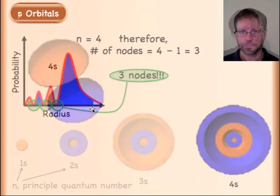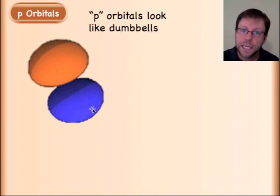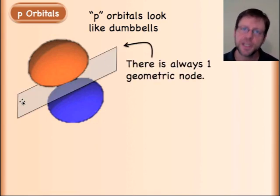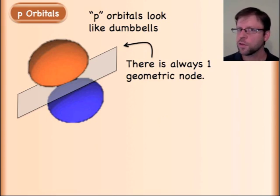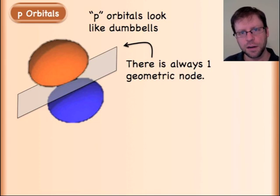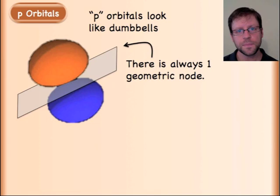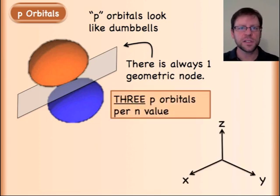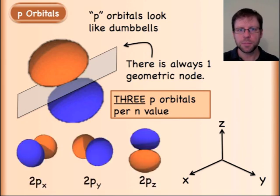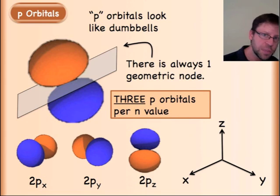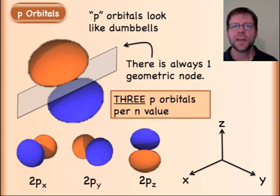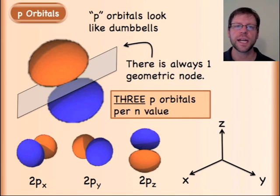The next type is called a p orbital, and what's interesting is they always look like dumbbells. They always have a geometric node — specifically a plane between the two lobes where the electron cannot exist. The nucleus sits somewhere in the middle. There are three different p orbitals for a given principal quantum number — for example when n equals 2, you have the 2px, 2py, and 2pz.